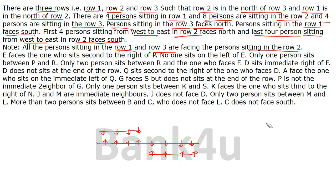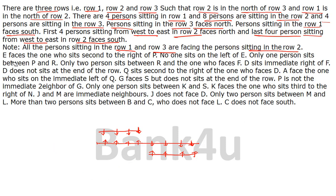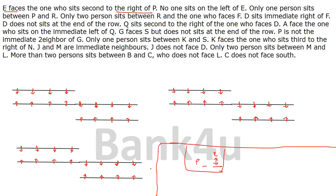This is not so tough — we can make it very easy. I have taken only a few pieces of information here so that I can put all the possibilities together easily. The first clue is: E faces the one who sits second to the right of P, so P's second-right person is going to face E. We'll keep this on hold for now.